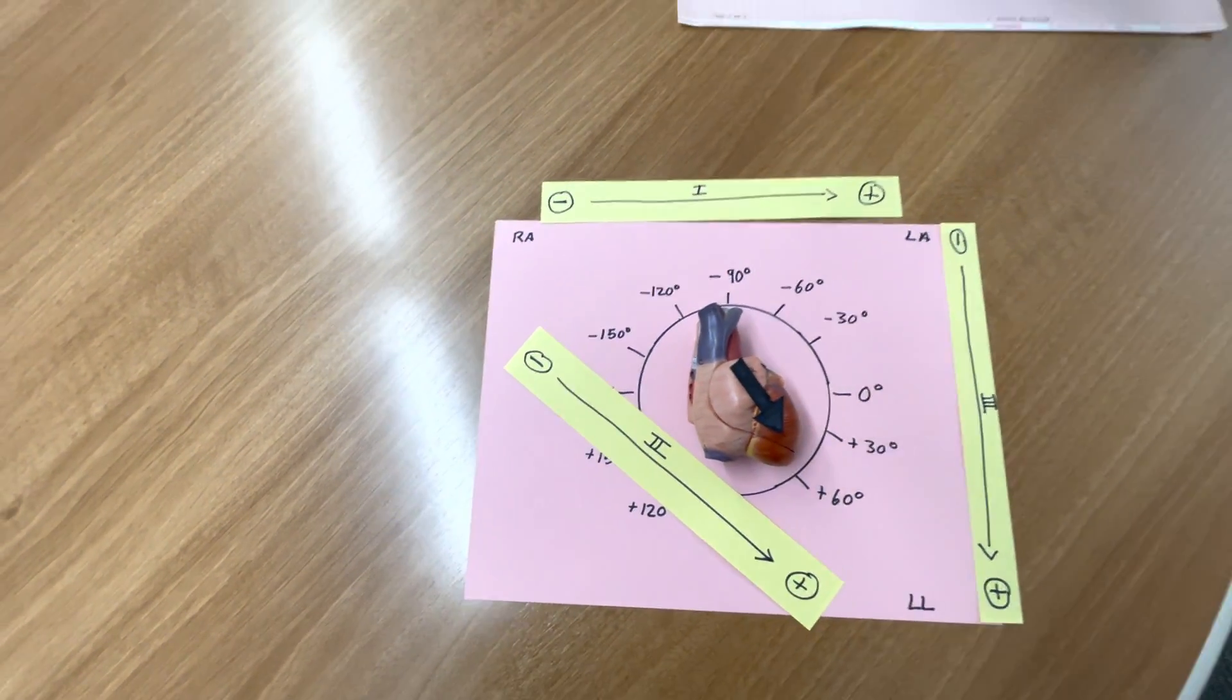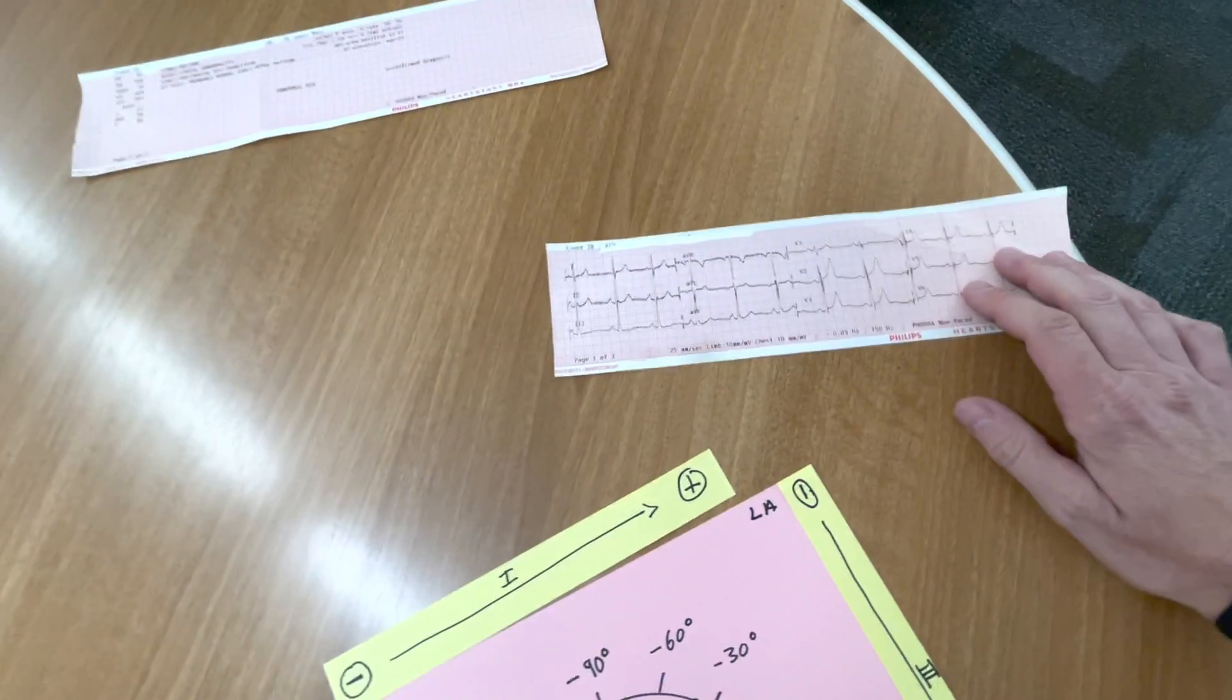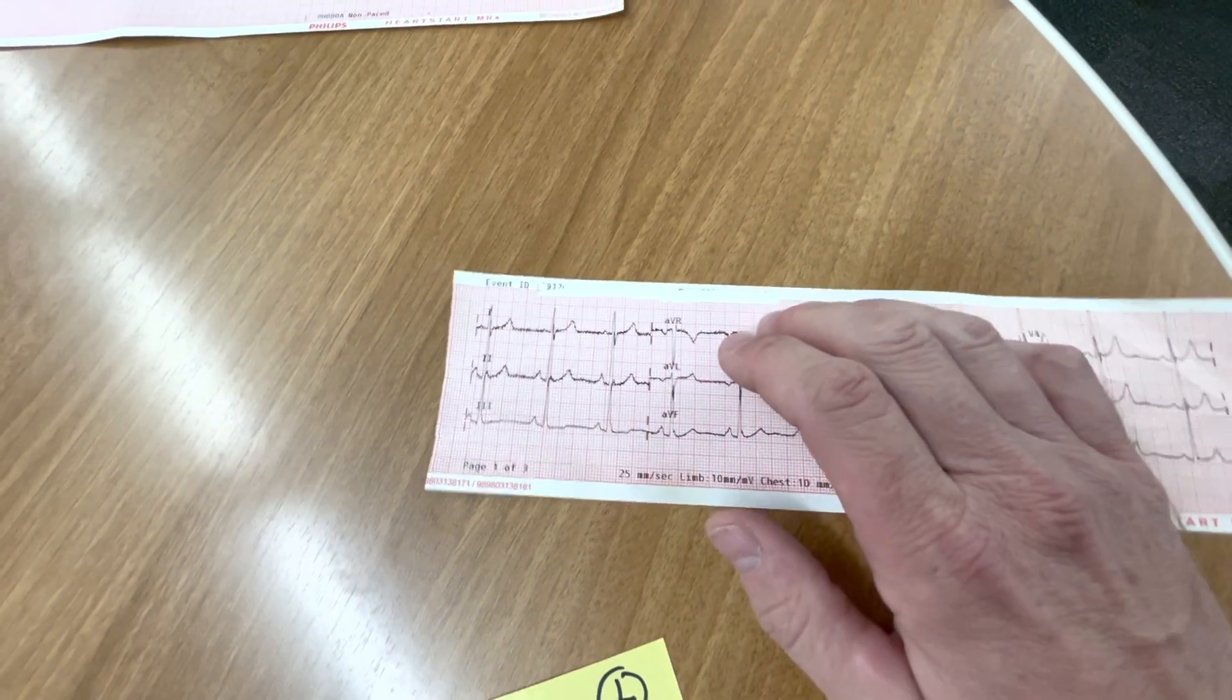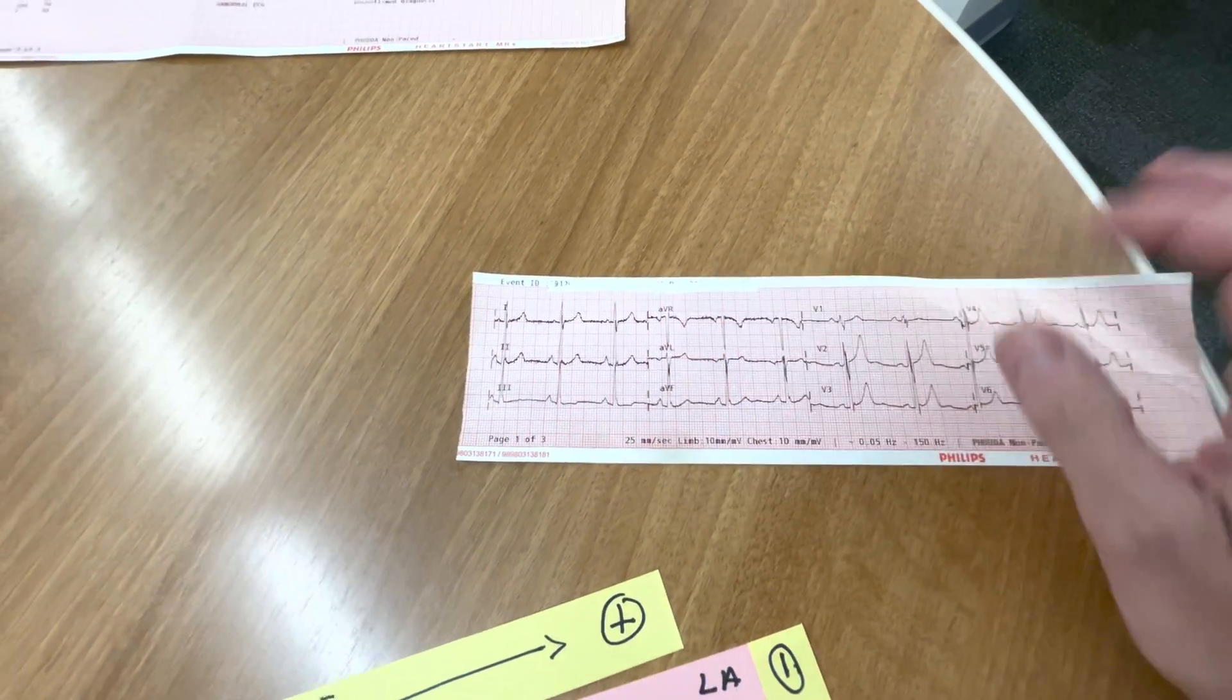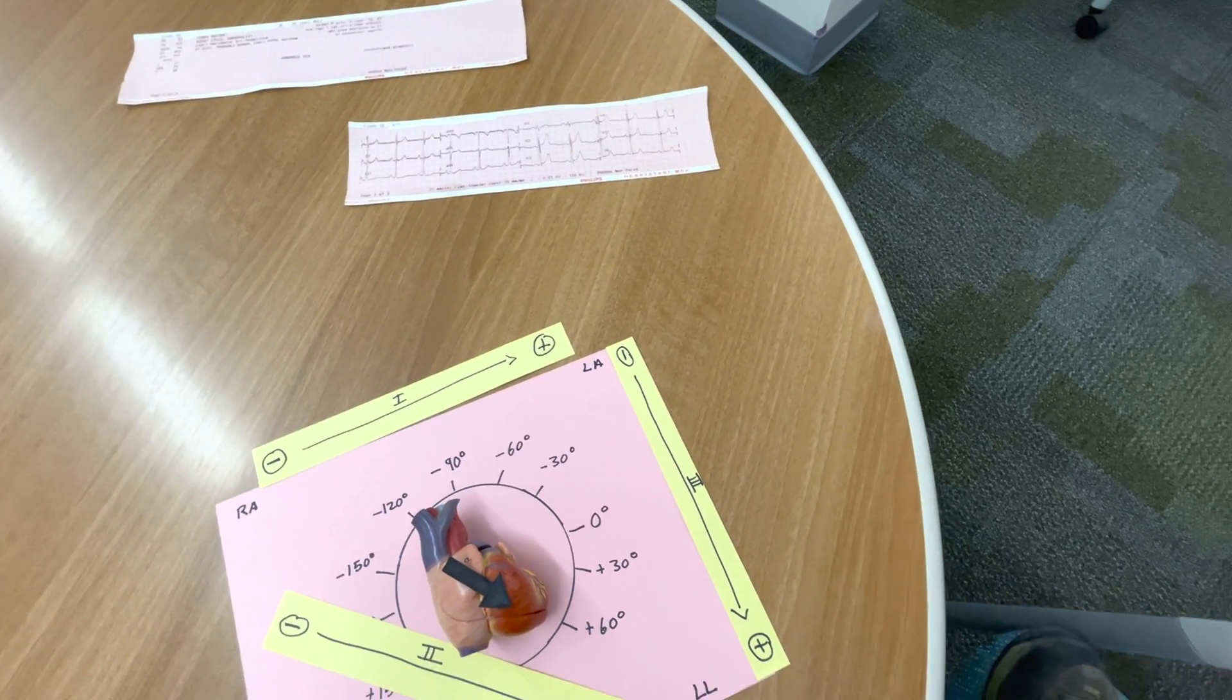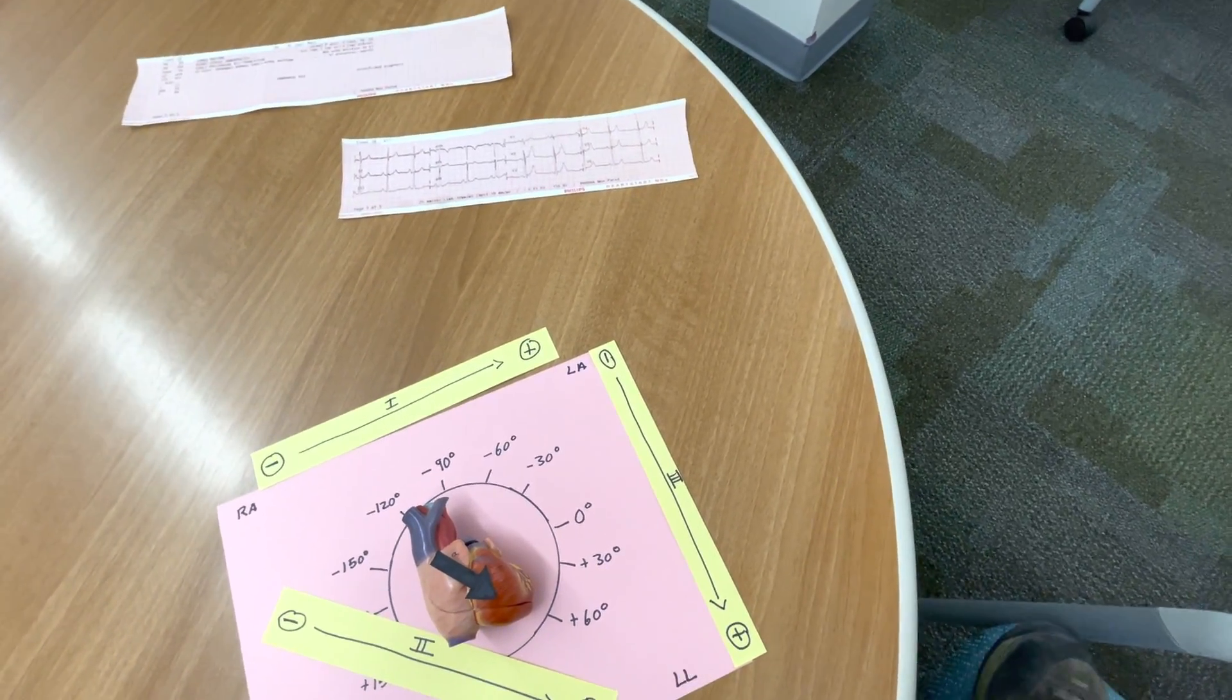And remember, whenever electrical activity is moving toward a positive electrode, that's going to produce positive deflection on the ECG. So, when I print a 12 lead off on somebody, and I look at the limb leads, 1, 2, and 3, and I see a QRS that is upright in all three leads, that tells me right away, without looking at numbers, that I'm dealing with someone that has normal axis.